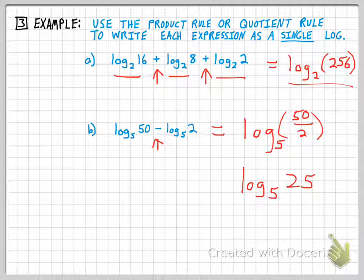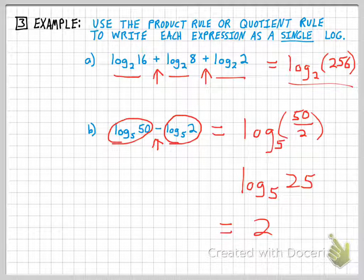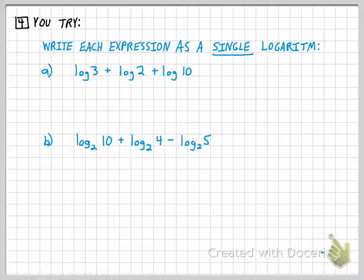This is kind of interesting that individually you can't evaluate that in your head. You need a calculator. But when you combine them and come up with a single logarithm, you actually get an expression that you can evaluate. So we can go one step further and say that this is just 2 because 5 squared is 25. So again, sometimes it's advantageous to condense a long expression into a single logarithm.